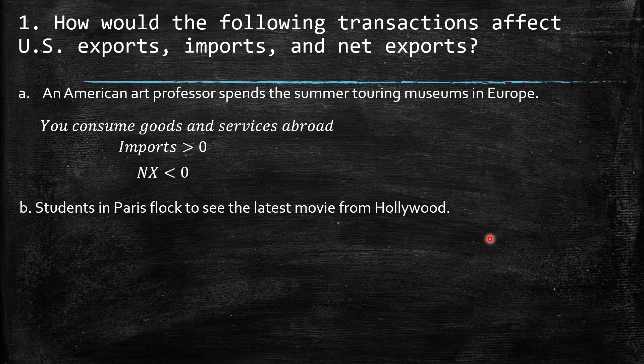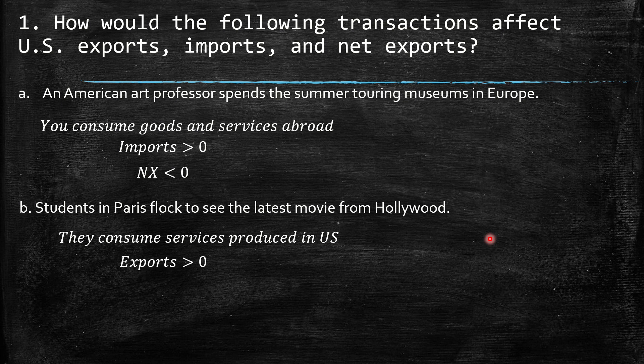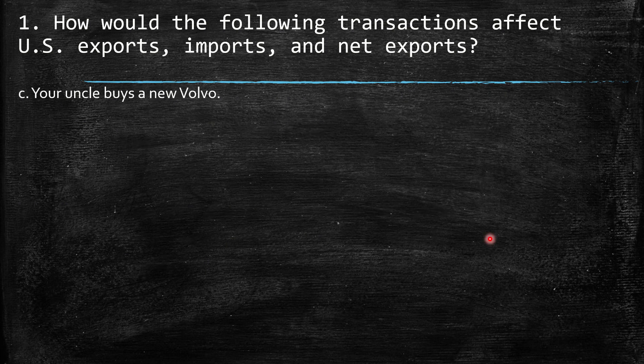B: Students in Paris flock to see the latest movie from Hollywood. They consume a good produced in the US — the film produced in the US. So we have an export from the US side increase, and then we have a net export positive change.